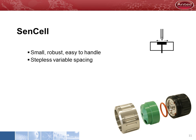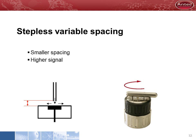The SenCell is a wall jet cell designed for the highest sensitivity. The cell is small, robust and easy to handle. Instead of a polymer spacer, it has stepless variable spacing. In a turn of the hand, the spacing can be set from wide to almost zero micrometers. This allows for tuning of a method for best possible detection performance.